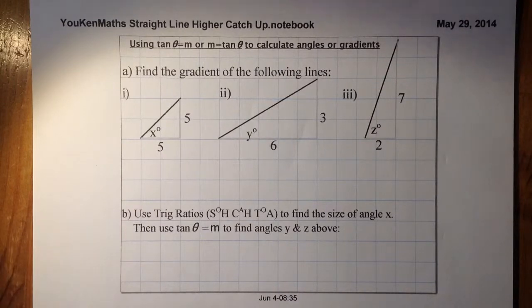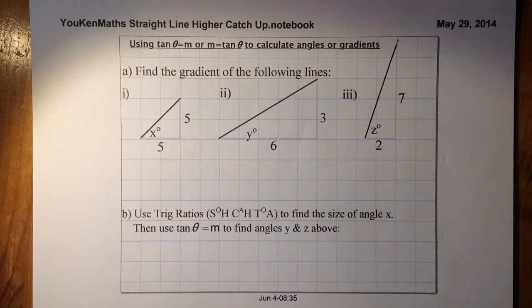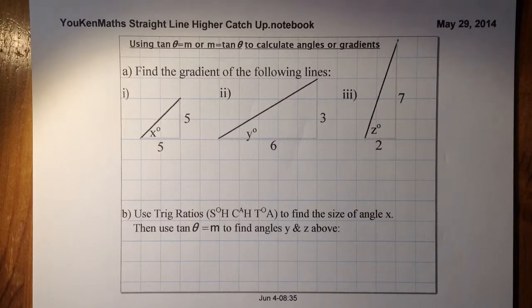This is higher straight line, and what we're looking at is the gradient of a line, or we're looking at the angle a line makes with the OX axis — just the X axis basically.